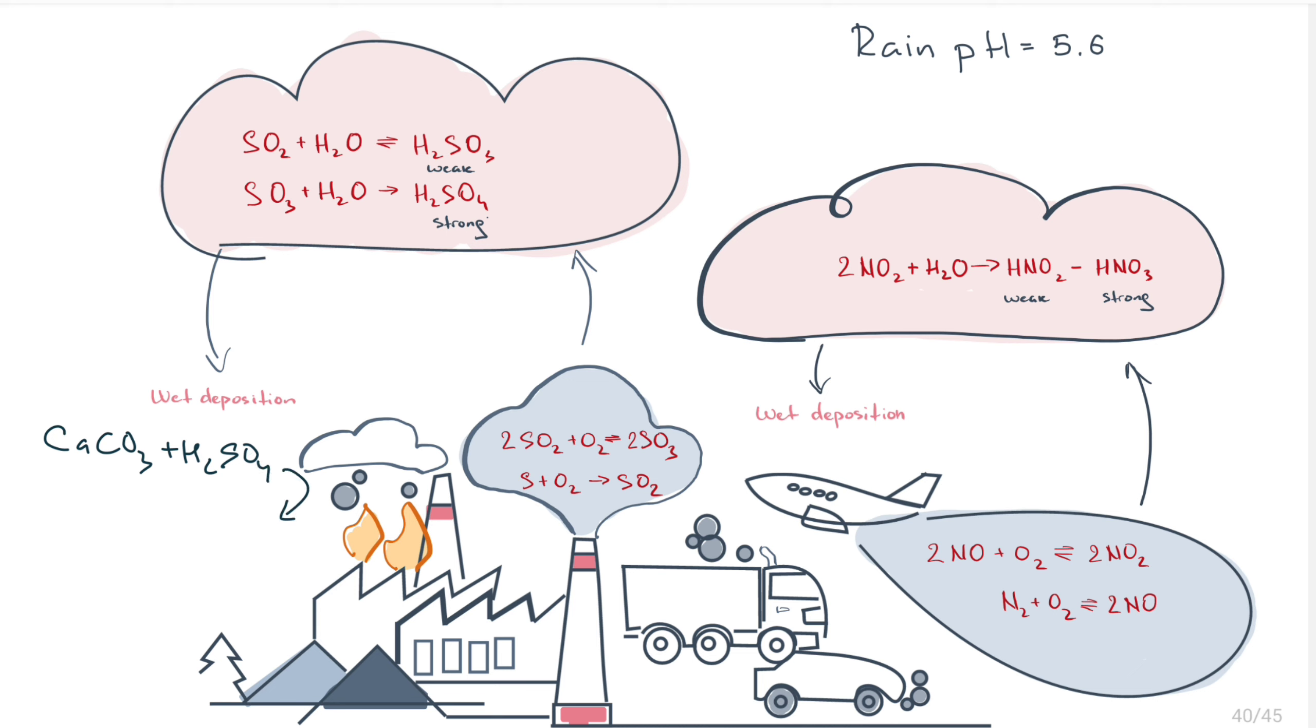Here we will observe production of calcium sulfate, water, and carbon dioxide. The same will happen with nitric acid because it is also a strong acid.